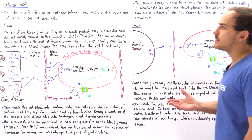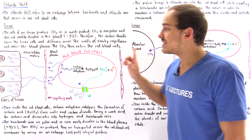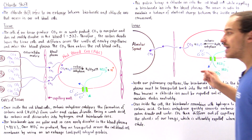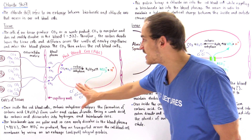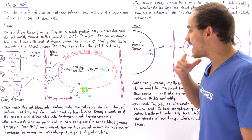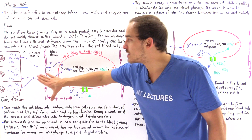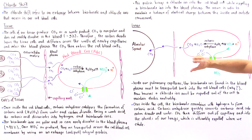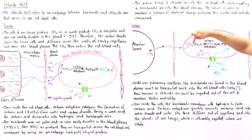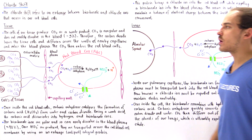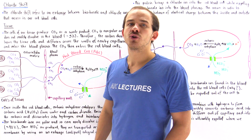The chloride shift takes place inside the red blood cells and occurs not only in the tissues but also in the lungs, but the process is reversed in each case to maintain an electrically neutral passage of ions. In the red blood cells of the tissues, bicarbonate exits while chloride enters. In the lungs, the opposite is true: a single chloride ion exits when a single bicarbonate ion enters the red blood cell, allowing it to be converted back into carbon dioxide for exhalation.